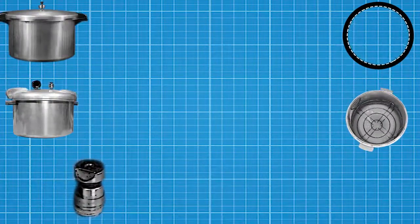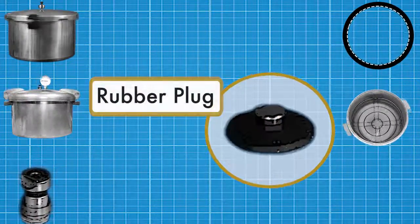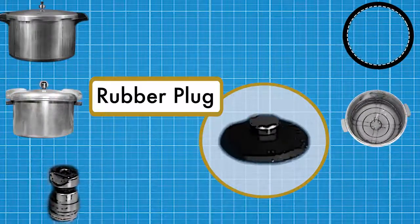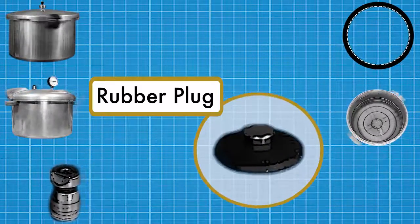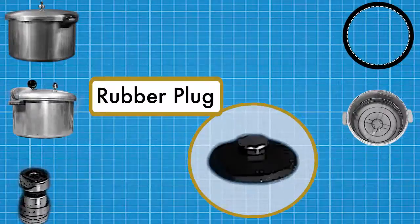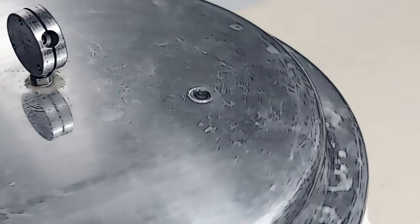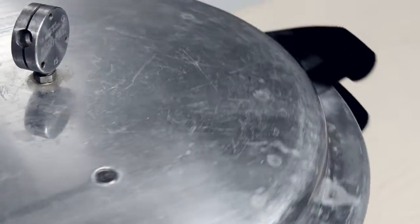All canners should have some sort of pressure relief mechanism. In modern canners this is typically a rubber plug that will blow off if too much pressure builds inside the canner. Make sure that this rubber piece remains soft and pliable so that it will work correctly.